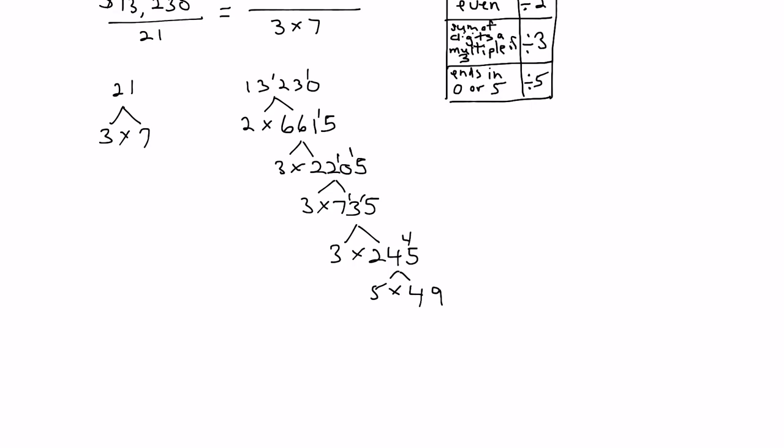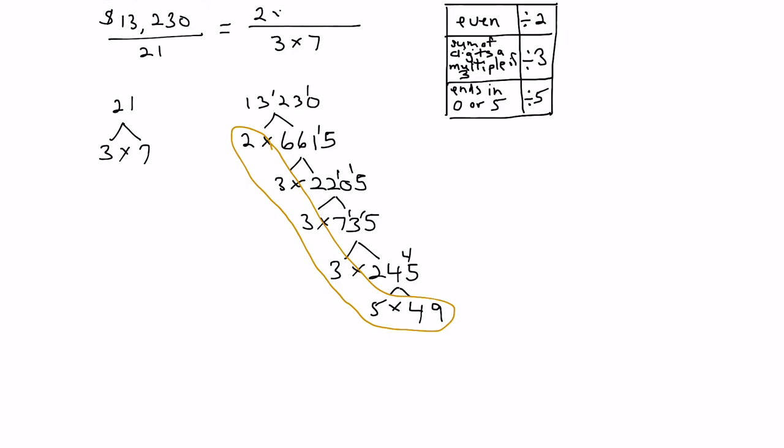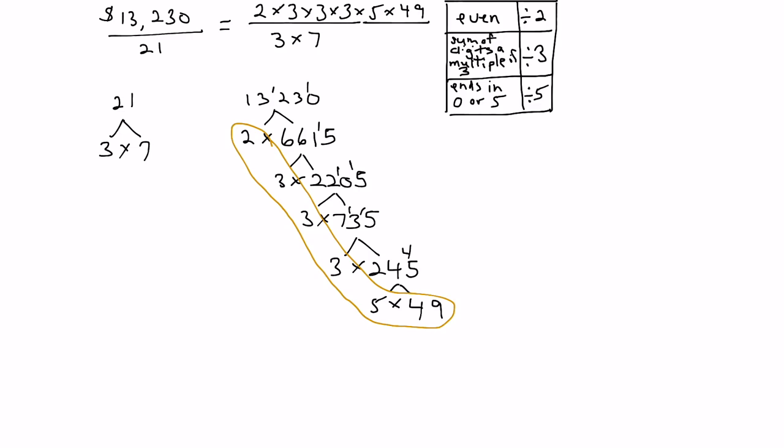Our answer is 13,230 equals 2 times 3 times 3 times 3 times 5 times 49. So our top becomes 2 times 3 times 3 times 5 times 49. Then we can cancel top to bottom. This 3 can cancel with this 3. We also know that 49 is 7 times 7, so we could cancel one of these 7's and one 7 goes into 49 seven times. What we're left with is 2 times 3 times 3 times 5 times 7.